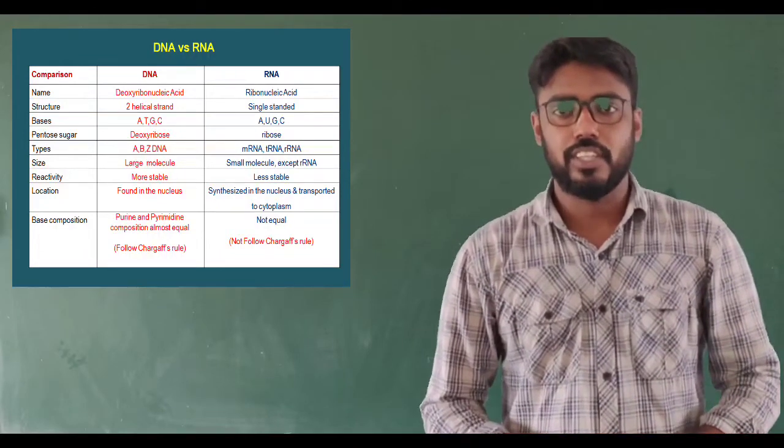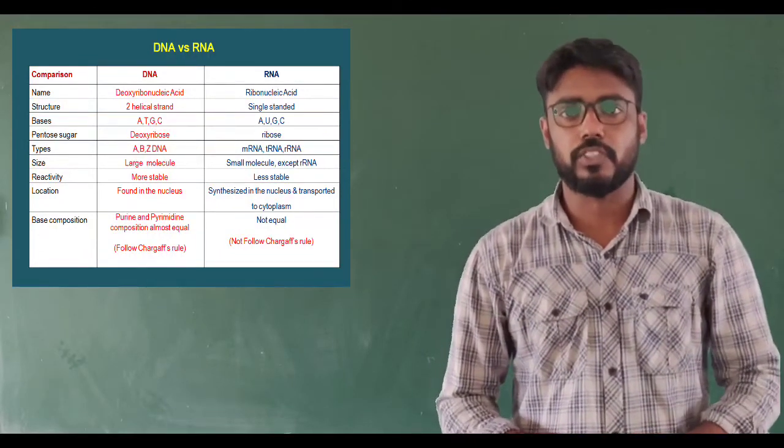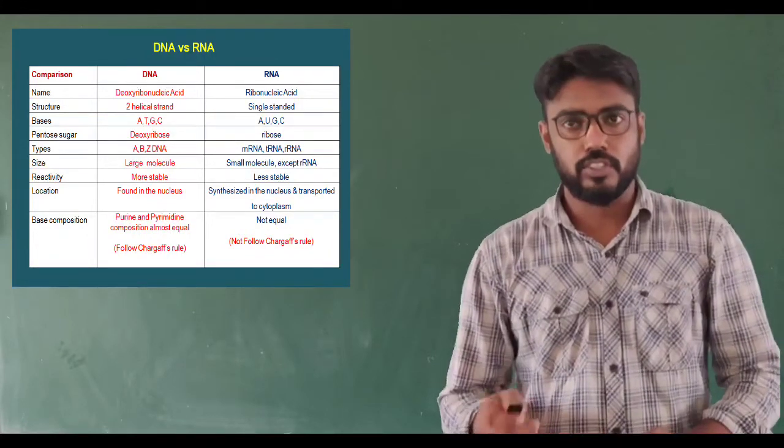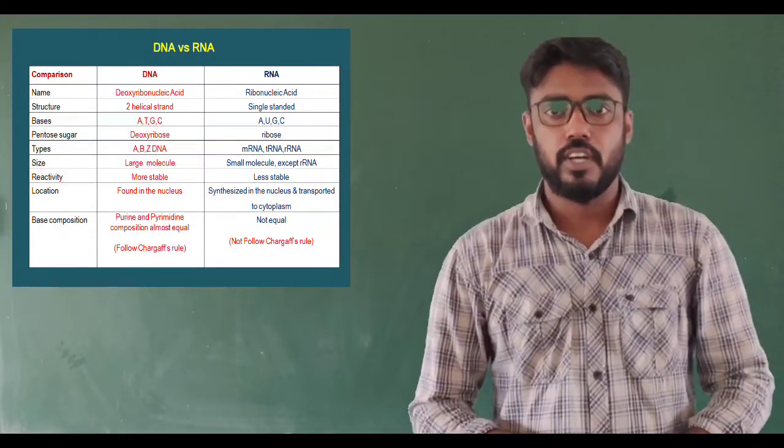In the case of pentose sugar, deoxyribose is present in DNA and ribose sugar is present in RNA.